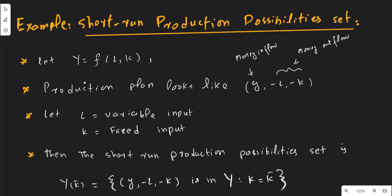In such a case, our production function is like this, and the production plan should look like this. It is a plan in which output and input are presented. You can see that both inputs — labor and capital — have a negative sign. It doesn't mean they are negative; rather, it shows money outflow, or payment to the factors of production.